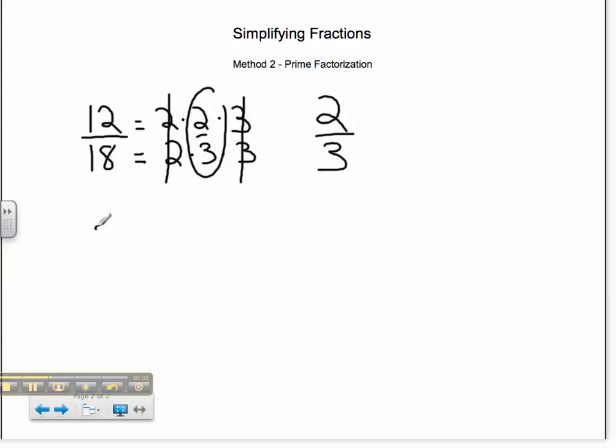Let's take our other example, 28/63. When I do the prime factorization of 28, I end up with 2 times 2 times 7. When I do the prime factorization of 63, I end up with 3 times 3 times 7. Now here the only numbers they have in common are the 7.